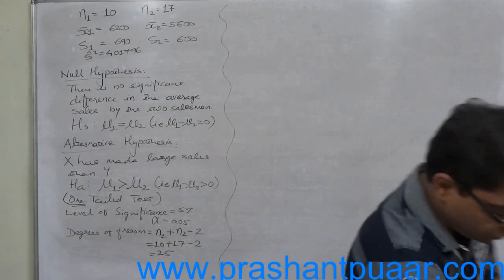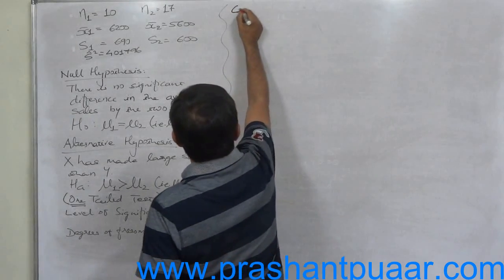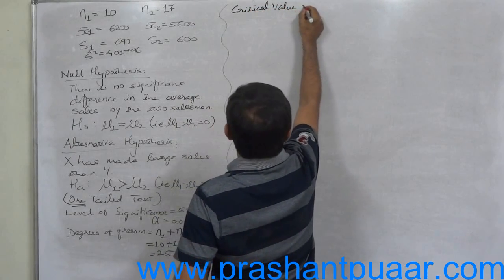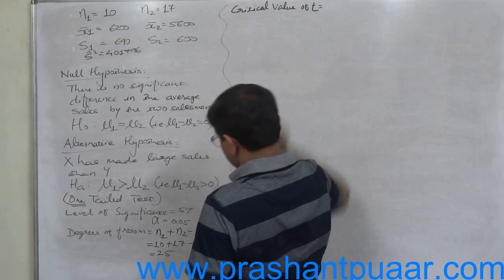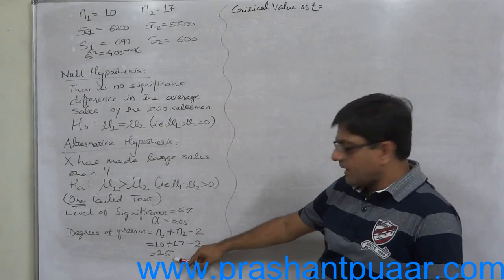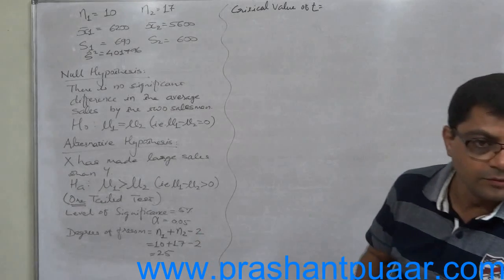On the basis of these two we have to first find out the critical value of t. In the first column of degrees of freedom take 25, that means row of 25, and column of 0.05: 1.708.